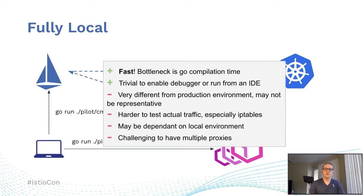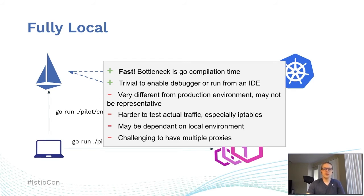This is really great for rapid iteration of various changes to Istio. One thing that may be challenging is it's not exactly representative of the production environment, so it may be hard to test things like webhooks or scale testing. It's also kind of hard to test actual traffic, especially involving iptables — you can probably do it, but it's not trivial. And this probably only works on Linux to run Envoy. There are some downsides, but if you can get this set up, it is probably the quickest way to iterate.